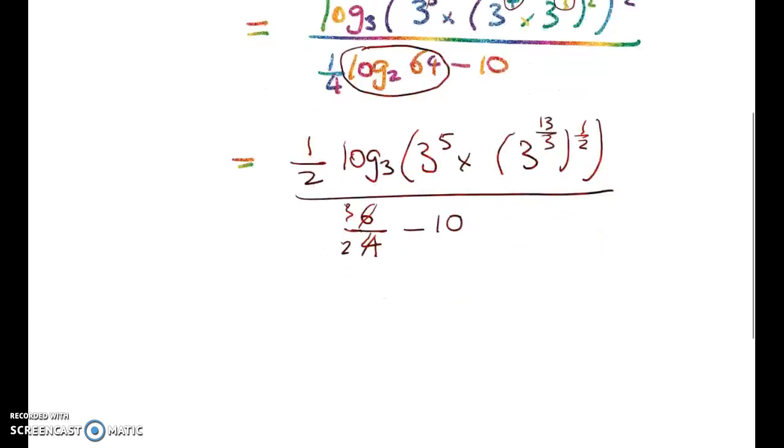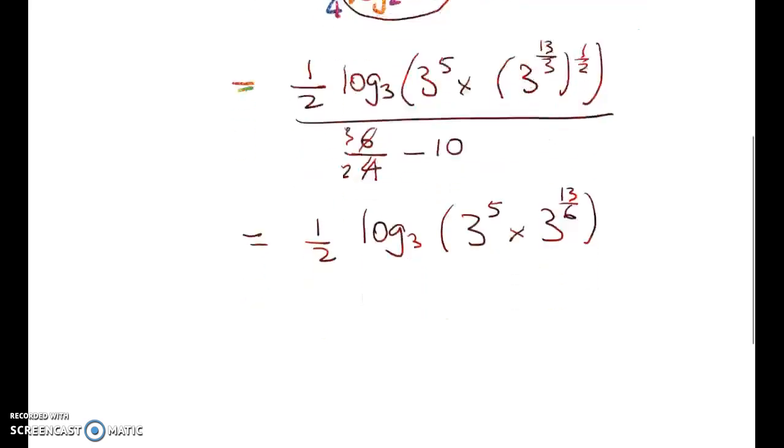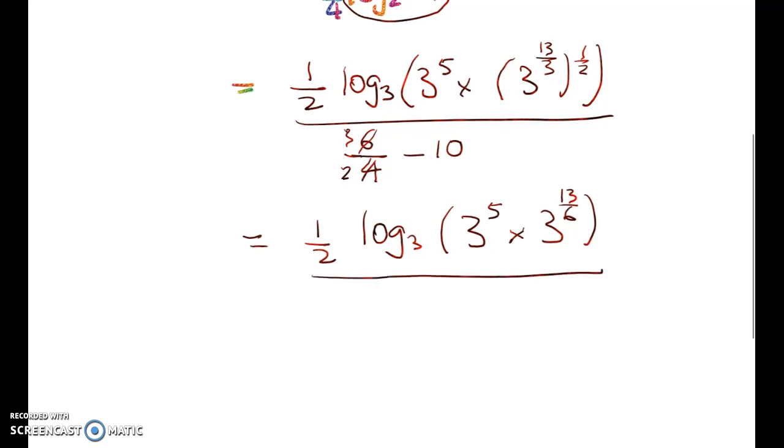So what have we got now? Well, we've got a half times log to base 3 of 3 to the 5 times 3 to the 13 over 6, gives me 3 minus 20 over 2.